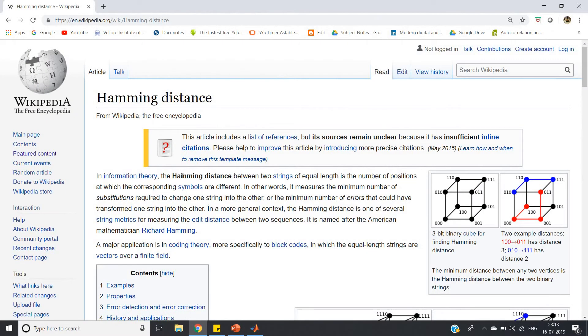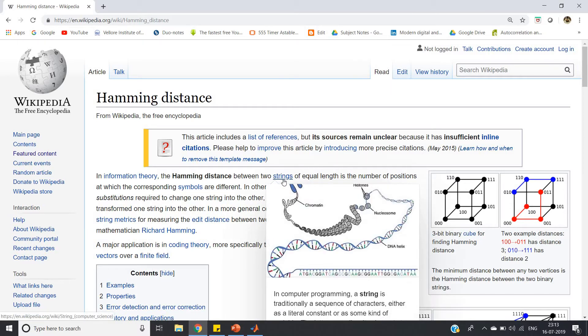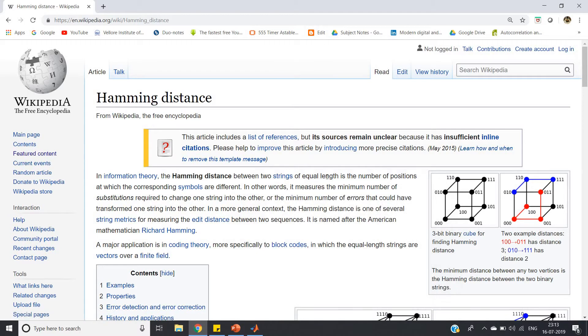In information theory, Hamming distance between two strings of equal length is the number of positions at which the corresponding symbols are different. That is the condition: two strings must be of equal length, and the number of positions at which the corresponding symbols are different, you just sum them up - how many such positions are there, and that is called Hamming distance.